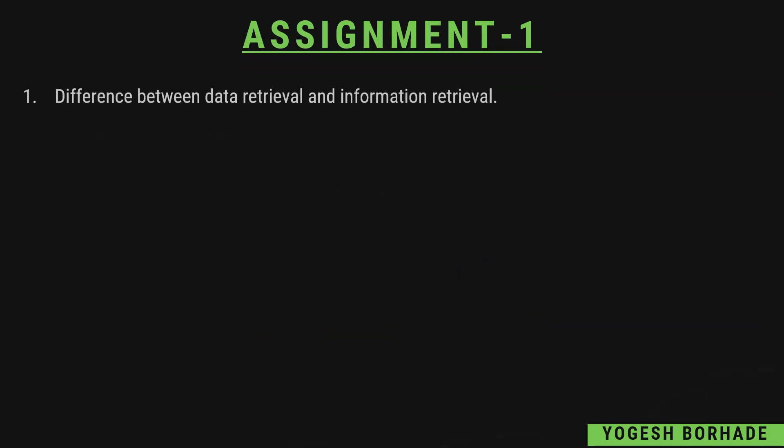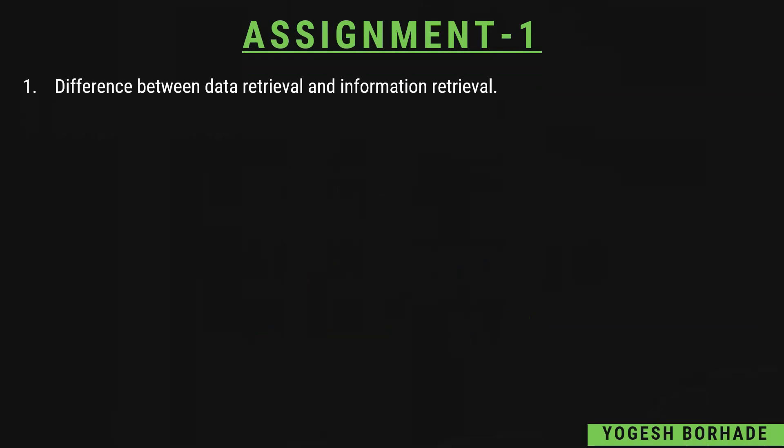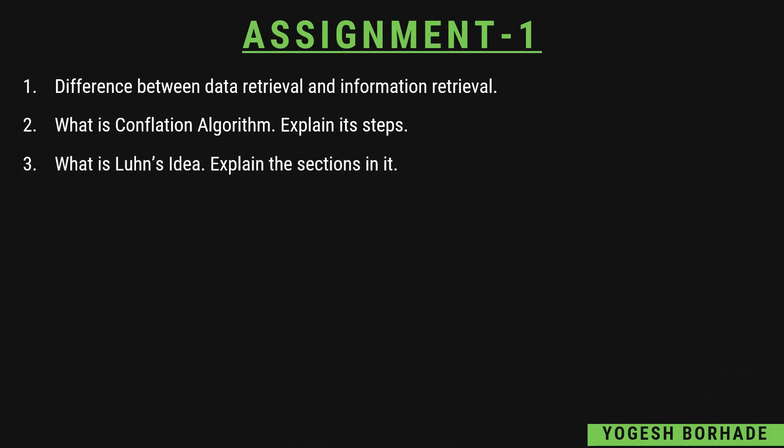We'll discuss the questions assignment-wise. For the first assignment, you can prepare the difference between data retrieval and information retrieval, then what is a conflation algorithm and what are the steps involved in it. They might ask you to solve one example based on this algorithm. Then what is Luhn's idea and what are the different sections in that Luhn's idea or the graph. Links to those videos are in the description and I button, where I have explained data retrieval vs information retrieval and the conflation algorithm.